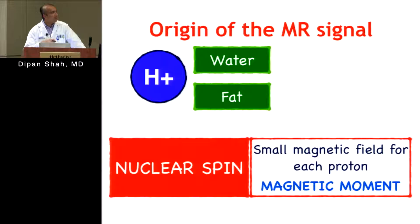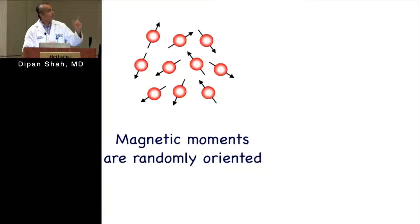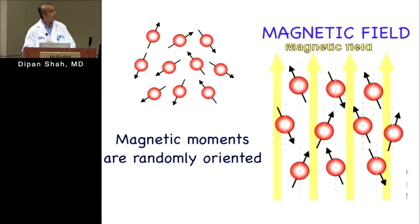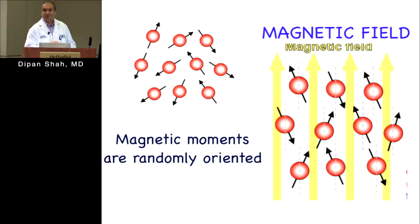When hydrogen protons are placed into a magnetic field, they have a certain spin rate — you can think of them like spinning tops. Outside a magnetic field they spin in random orientations, but once placed inside a magnetic field they begin to align with it. Not every single proton lines up — at one tesla, it's only about one in a million more protons lined up versus down. But the net result adds up to a net magnetization in the positive direction.